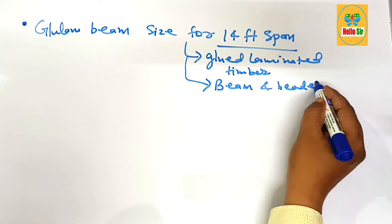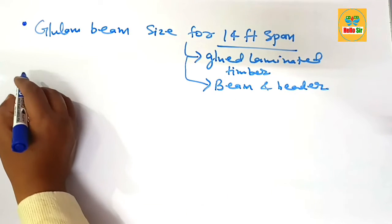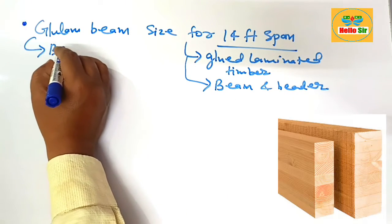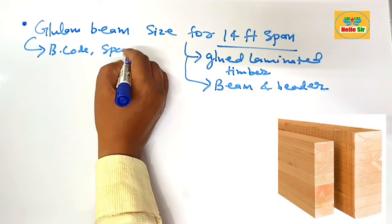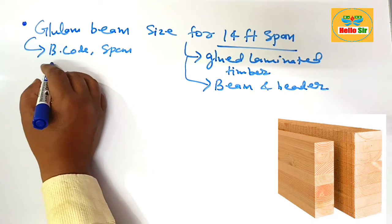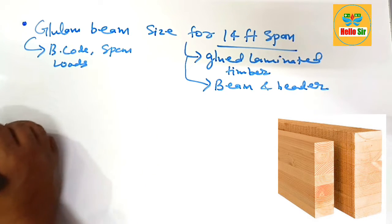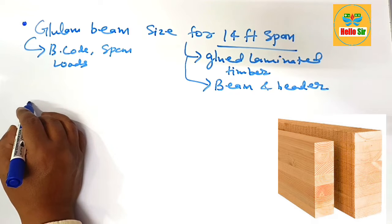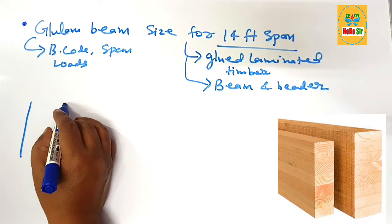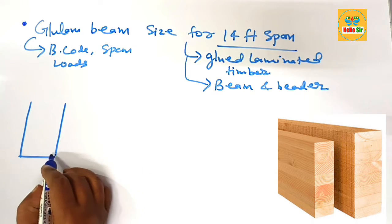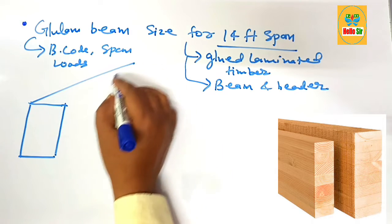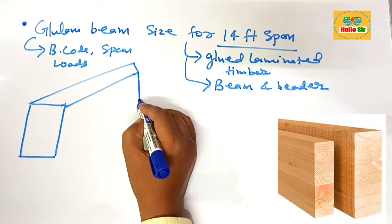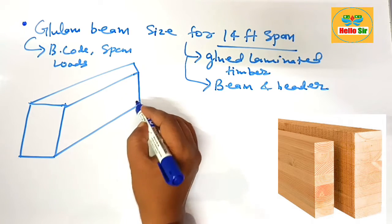The correct glulam beam size depends on many factors like building code, span length, specific requirements, and load conditions. Here we make a rough diagram to understand the different dimensions of a glulam beam — meaning length, width, and depth.